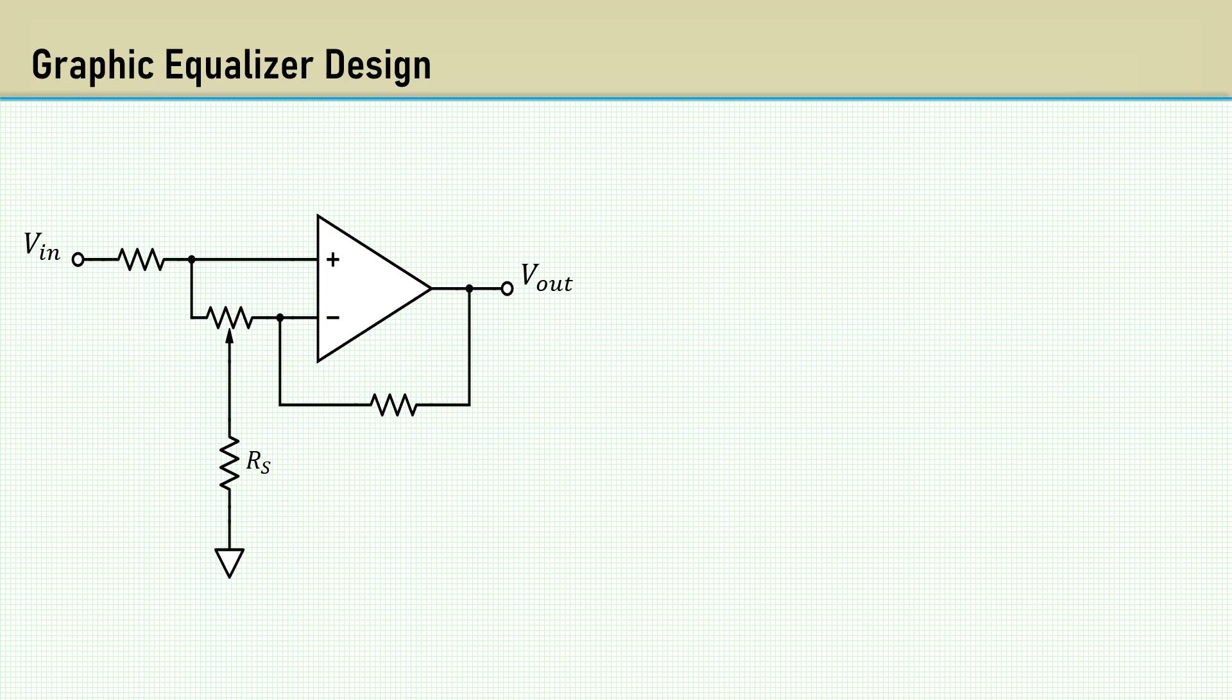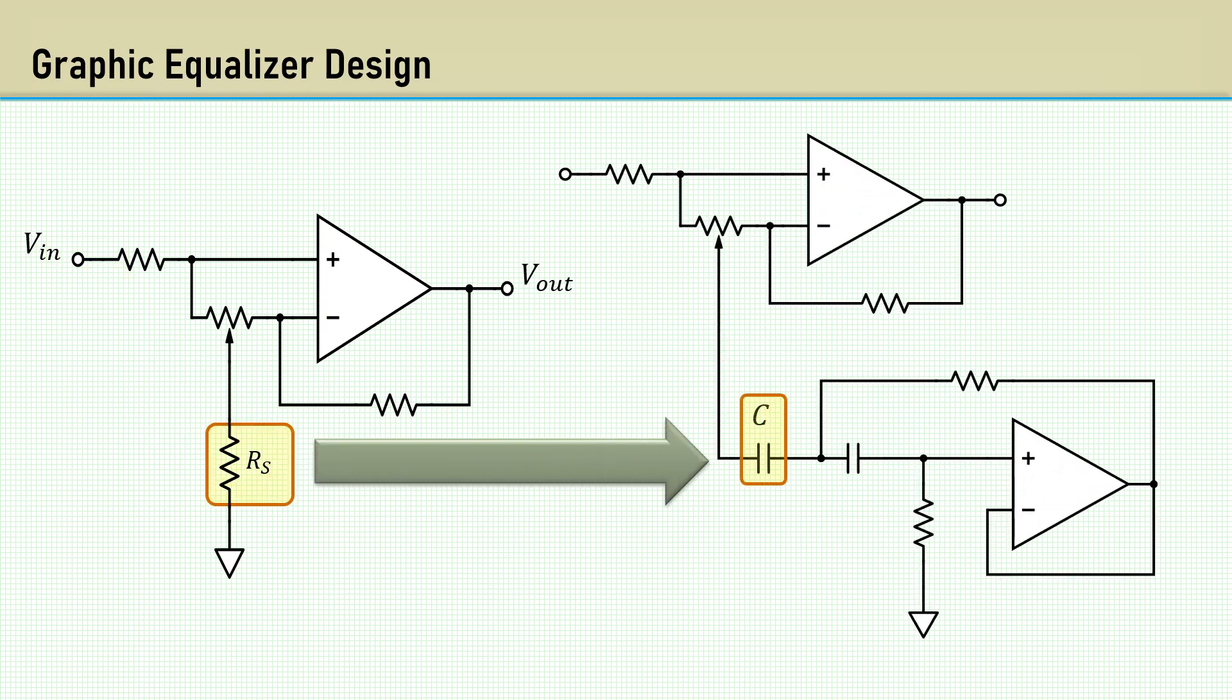As explained in the cut-boost level control video, the bandpass band-reject filter can be made by replacing RS for the series capacitor and the gyrator as the simulated inductor, which contains a series resistor, RS, to adjust the Q of the filter.